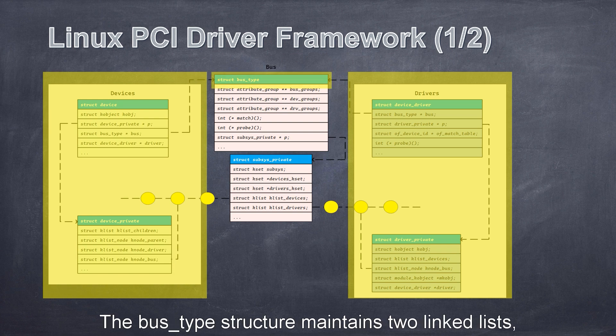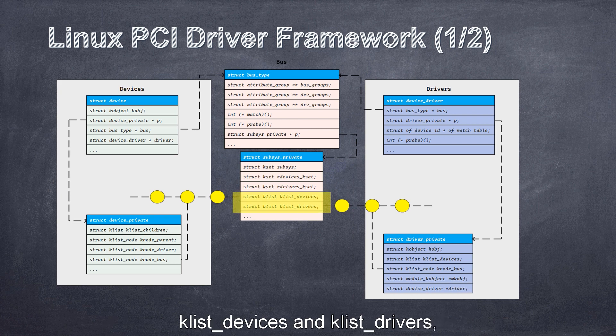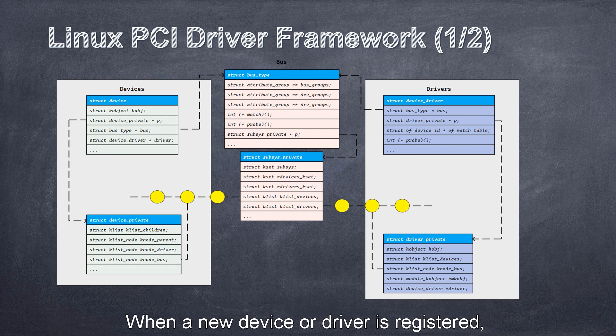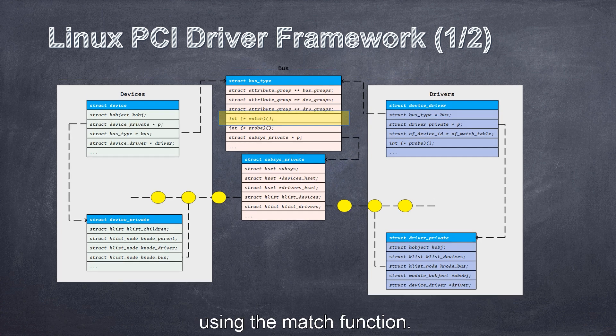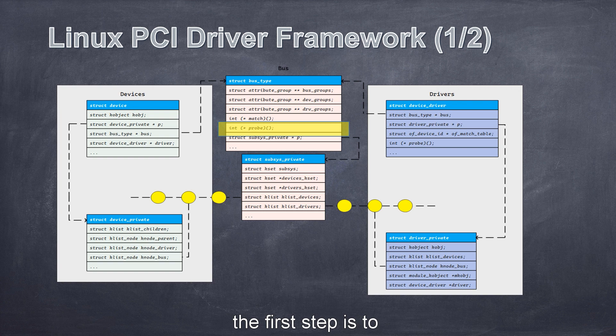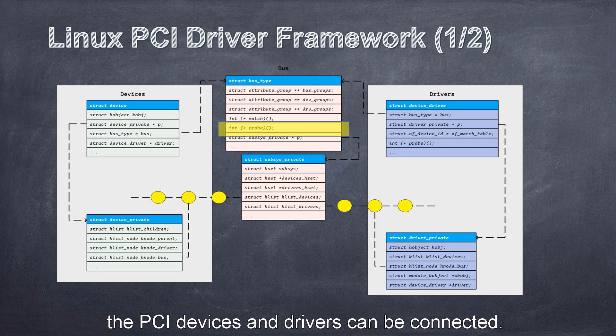The bus type structure maintains two linked lists, klist_devices and klist_drivers, to store the pointers of all the devices and drivers connected to the bus. When a new device or driver is registered, the system will attempt to match the device or driver using the match function. If the match is successful, the system will proceed to the probe function.